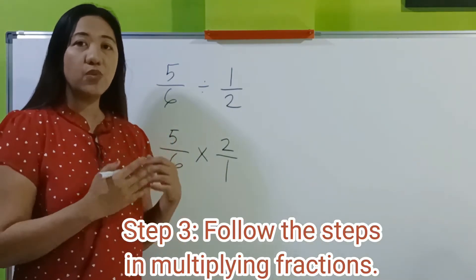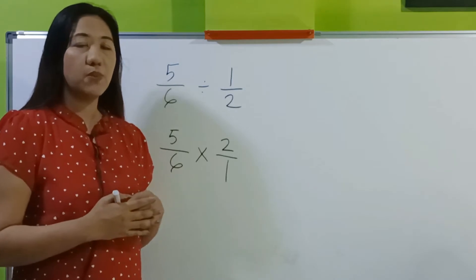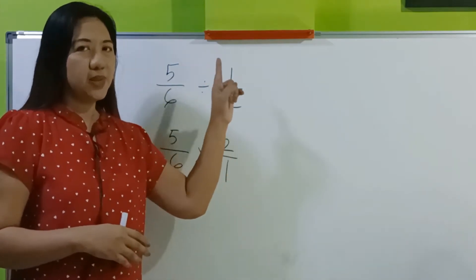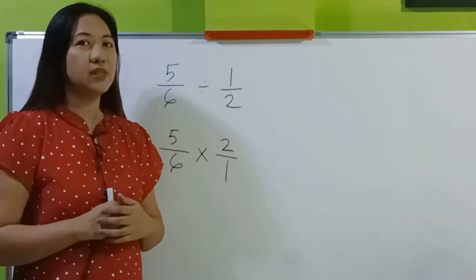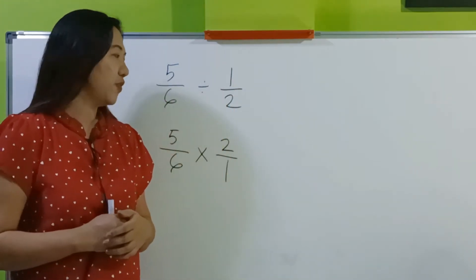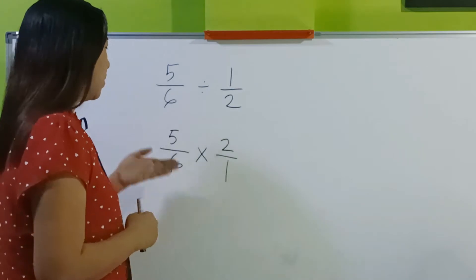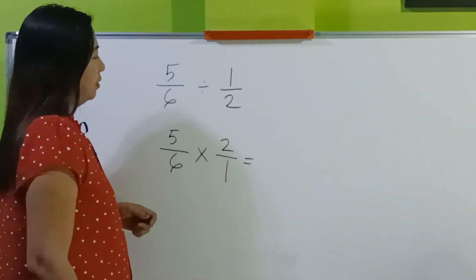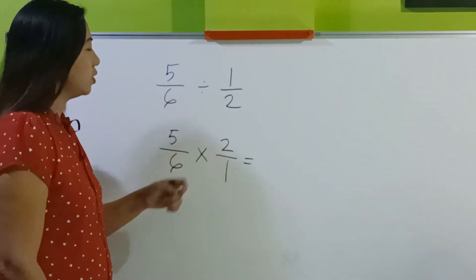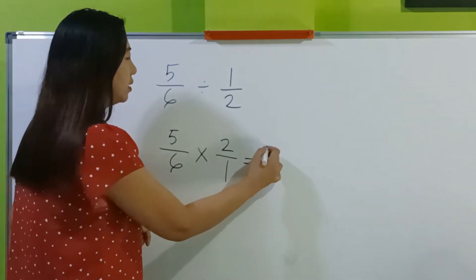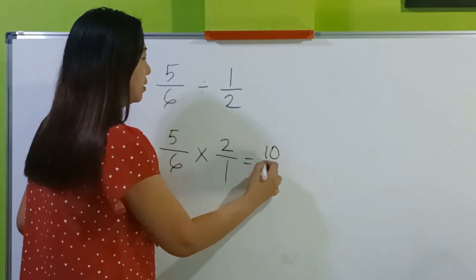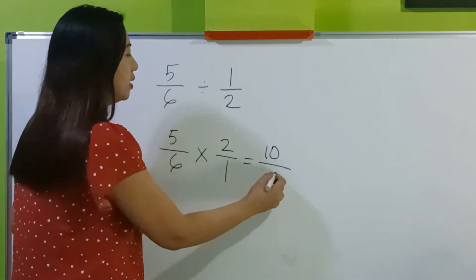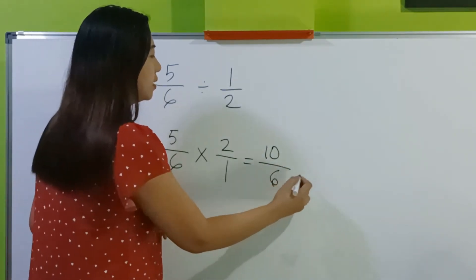If you haven't watched the video about multiplication of fractions, please visit the link above. Okay, so let's multiply. 5 times 2 is 10, 6 times 1 is 6.